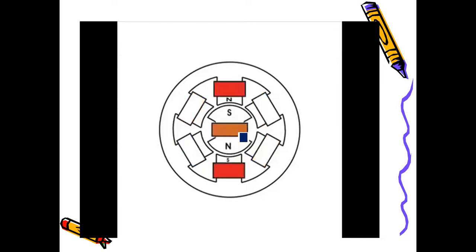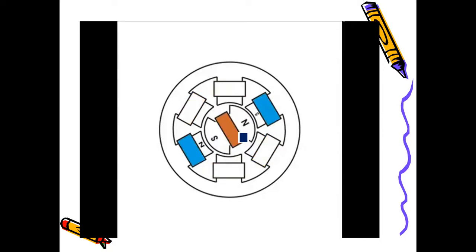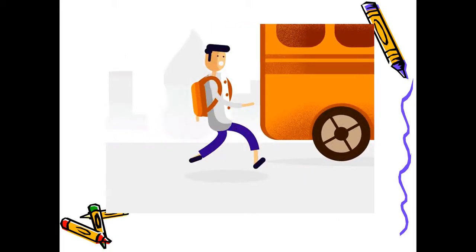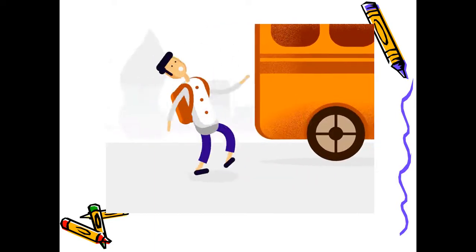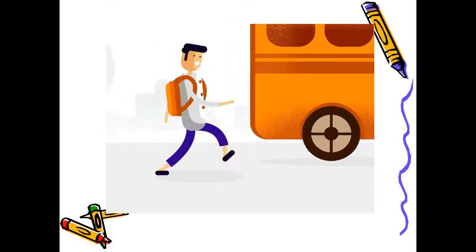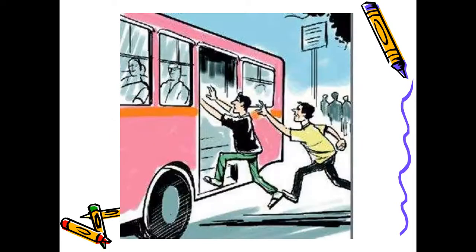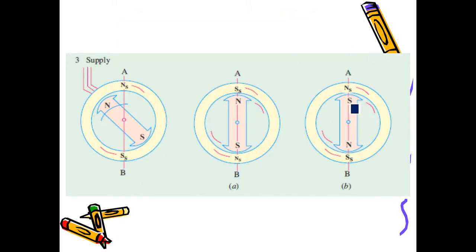The revolving flux is moving but the rotor is stationary. To catch up to the synchronous speed, consider a moving bus — if you want to get into that bus, you have to run behind it and match its speed. Similarly, for the synchronous motor, some prime mover has to rotate the rotor close to synchronous speed, and then it will lock in and rotate continuously.